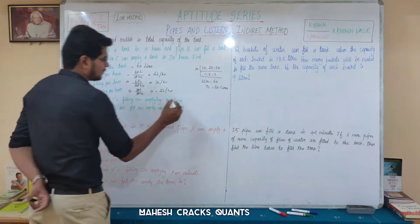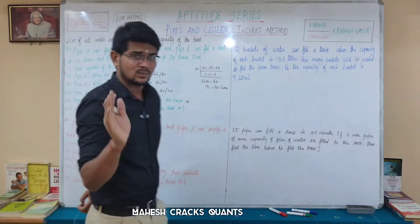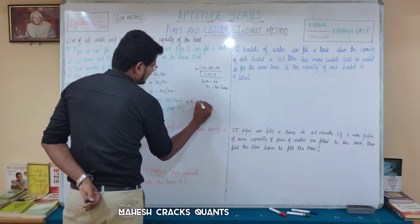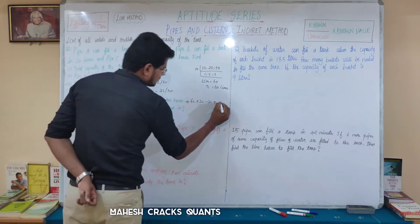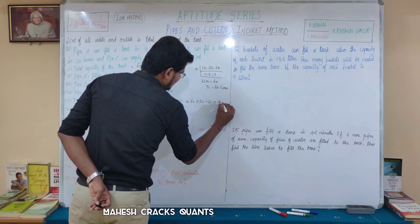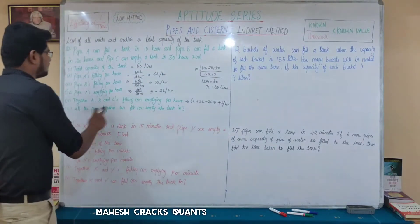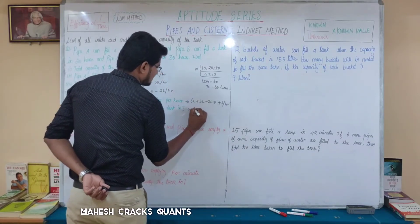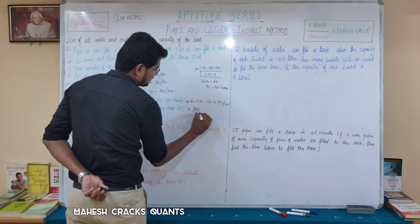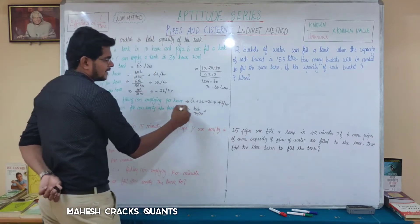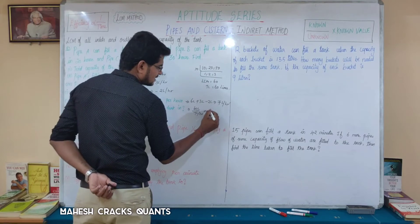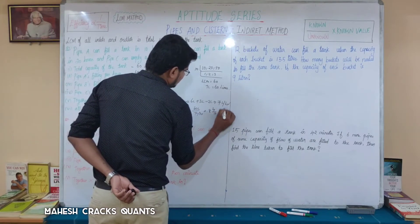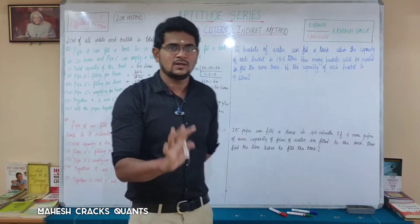A, B, and C together — filling or emptying per hour: 6 + 3 − 2 = 7 units per hour. All three pipes together fill 7 units per hour. Total capacity is 60 units. So time = 60 ÷ 7 = 8 and 4/7 hours. That is the time for three pipes together to fill the tank.